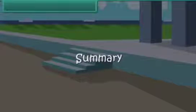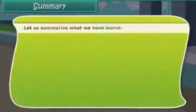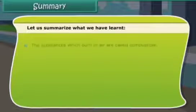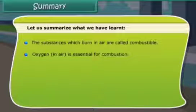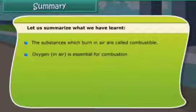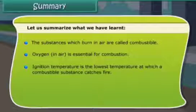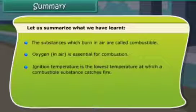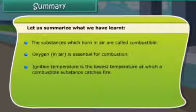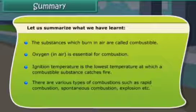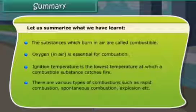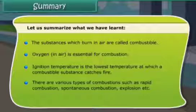Summary. Let us summarize what we have learned. The substances which burn in air are called combustible. Oxygen in air is essential for combustion. Ignition temperature is the lowest temperature at which a combustible substance catches fire. There are various types of combustions such as rapid combustion, spontaneous combustion, explosion, etc.